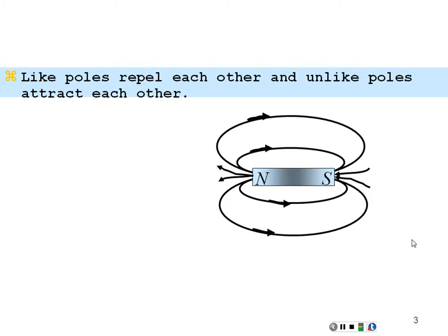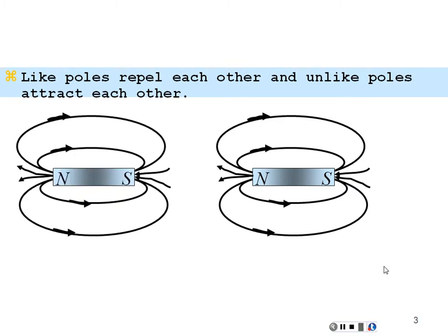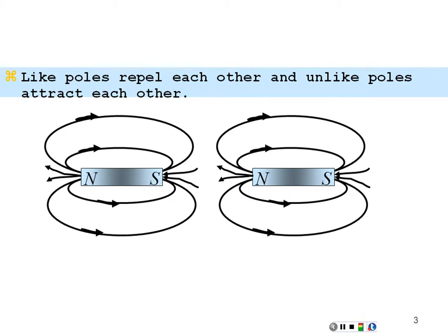Here's a magnet with a north and south pole, and another magnet with a north and south pole. Like poles repel and unlike poles attract. Magnetic field lines emanate from the north pole and terminate on the south pole — though they actually form closed loops all the way through. If two magnets are close together, field lines from one north pole terminate on the south pole of the other, causing attraction.